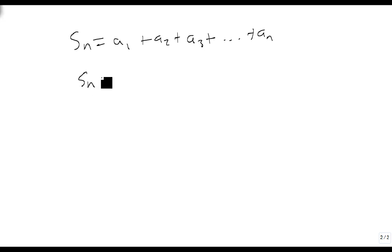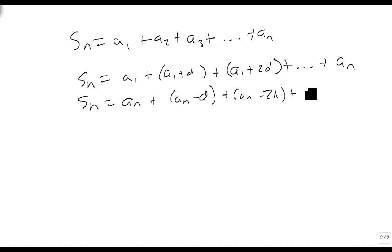Well, that means sn equals a1 plus a1 plus d, plus a1 plus 2d, and so on all the way up to an. And if we turn this around, we can do it again going the other way. sn equals an plus an minus d, plus an minus 2d, all the way down to a1 again.